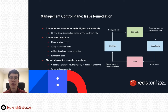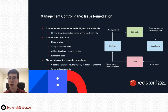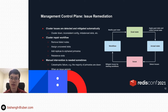Sometimes manual intervention is needed to resolve an issue — for example, when there is a catastrophic failure or when an issue persists even after the control plane tries to resolve it. For those scenarios, we have a monitoring system that can fire alerts to notify human operators.